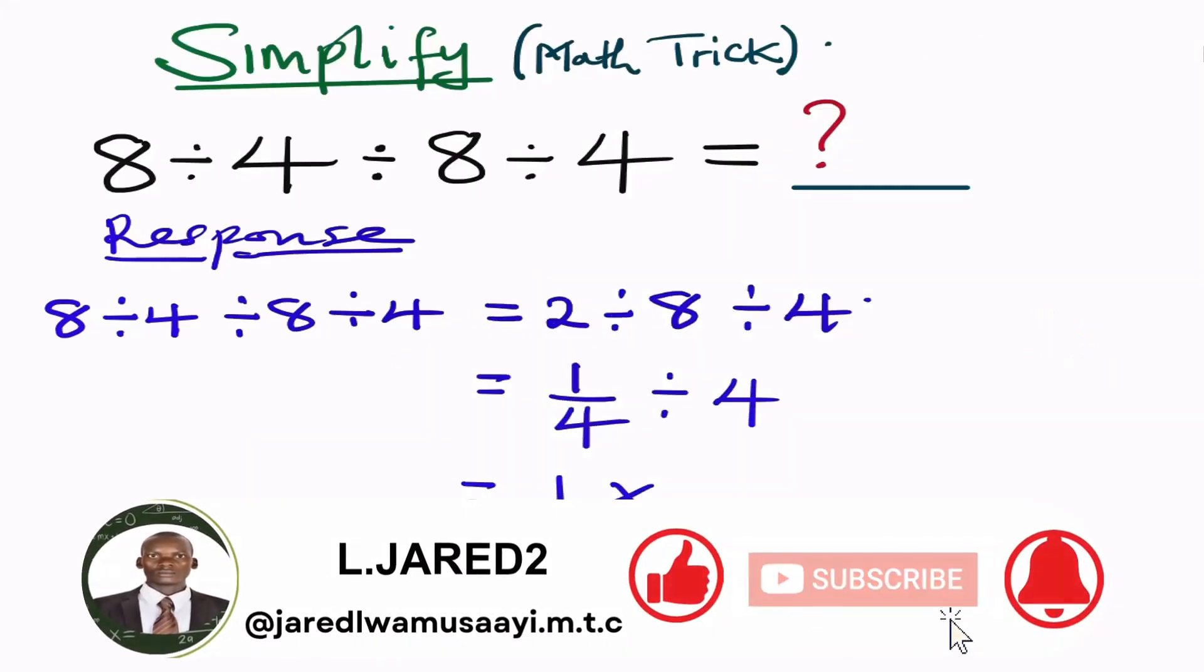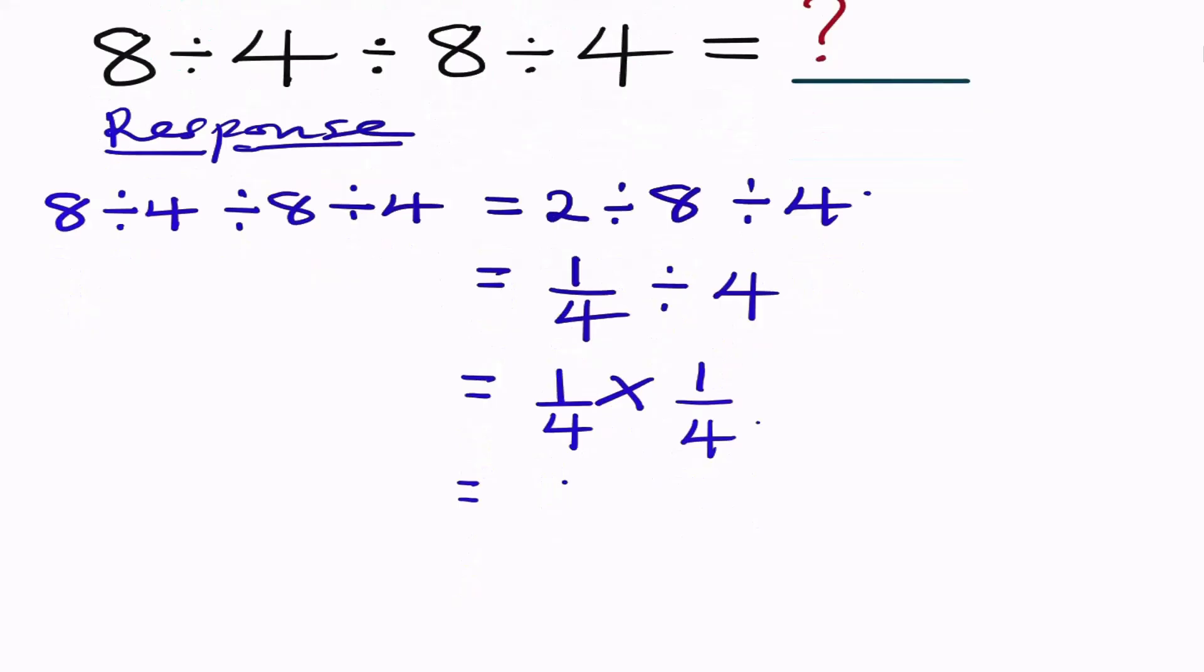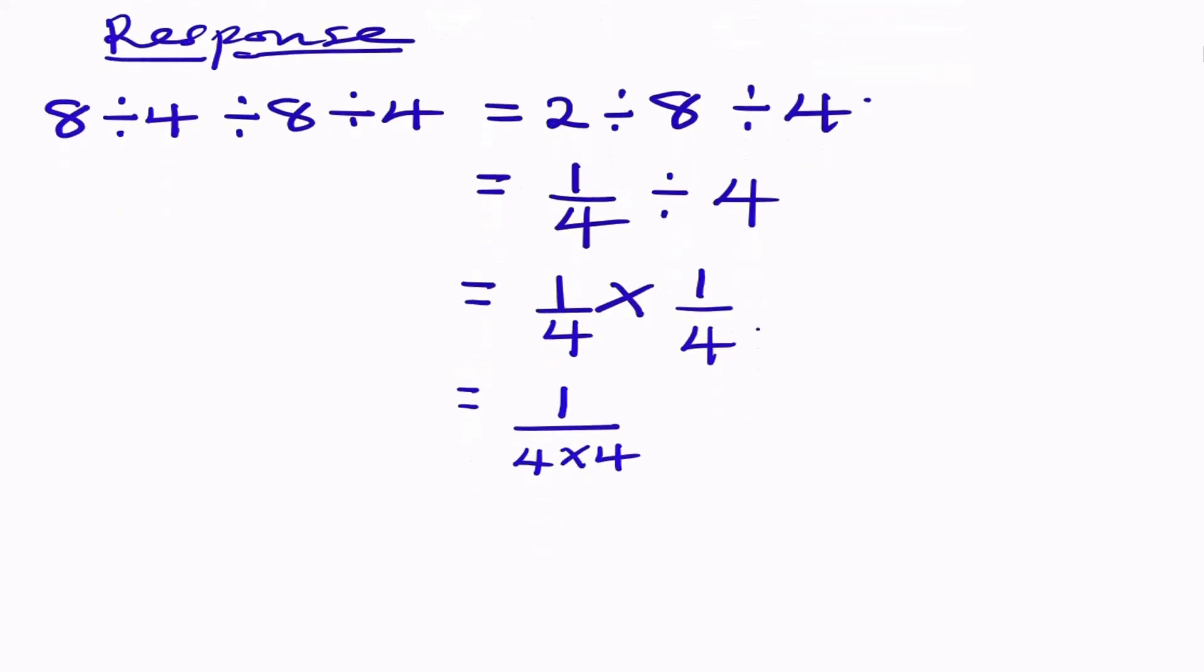Let's get a quarter multiplied by a quarter, implying that our next step, we are having 1 multiplied by 1, to give us a 1, divided by 4 multiplied by 4. So 4 multiplied by 4 is 16, that means we have 1 divided by 16. This means the expression 8 divided by 4, divided by 8, then divided by 4, equals to 1 divided by 16.